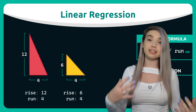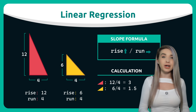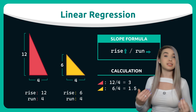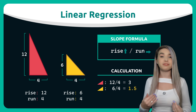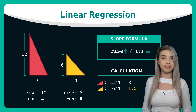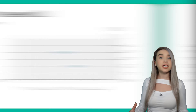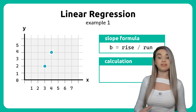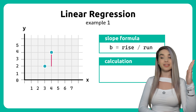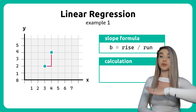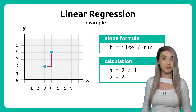We will then divide the rise by the run, which gives us the slope of 3 in the mountains and 1.5 in the valley. So in the case of our data points, we have the rise of 2 and the run of 1, which gives us the slope of 2.